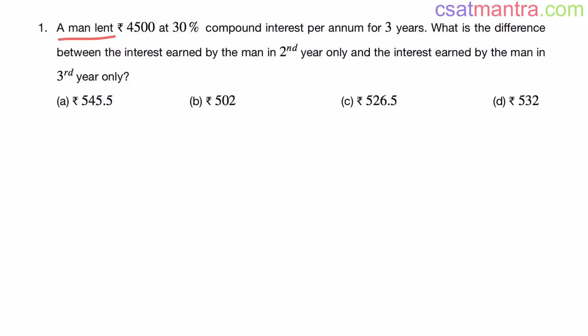A man lent 4,500 rupees at 30% compound interest per annum for 3 years. What is the difference between the interest earned by the man in 2nd year only and the interest earned by the man in 3rd year only?